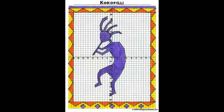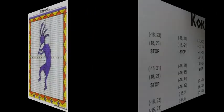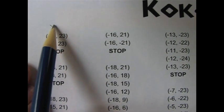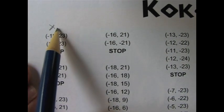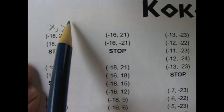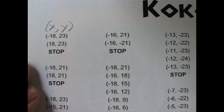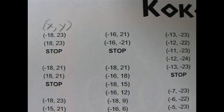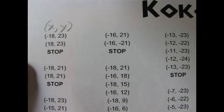Here is a finished product of the Kokopelli design. If you are new to plotting ordered pairs on a coordinate grid, write x, y above the list of coordinates to remember that the first number is the x-coordinate and the second number is the y-coordinate.